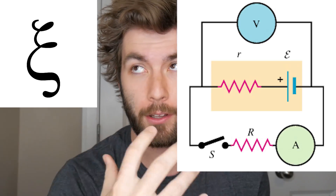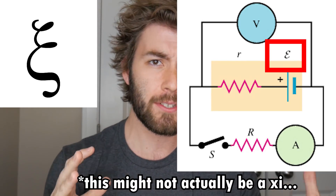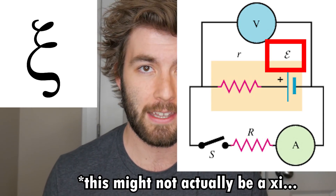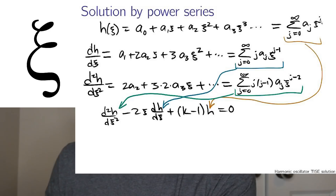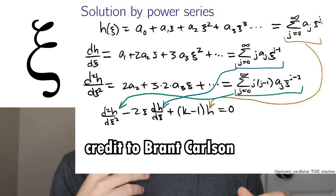Lowercase xi is a letter I personally refuse to learn how to write, but I've only seen it about two times in undergraduate physics: the first is when talking about EMF, electromotive force, typically in a circuit problem with some kind of battery; and the second time is finding power series solutions to the quantum harmonic oscillator and using this dimensionless quantity, xi, as a substitution for one term.